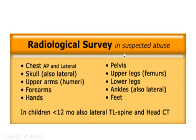For the radiological survey in suspected abuse, we send for chest AP and lateral, skull also lateral, upper arm, forearm, hands, pelvis, upper leg, lower leg, ankle, and feet. In children less than 12 months, lateral thoracolumbar spine and head CT are also indicated.